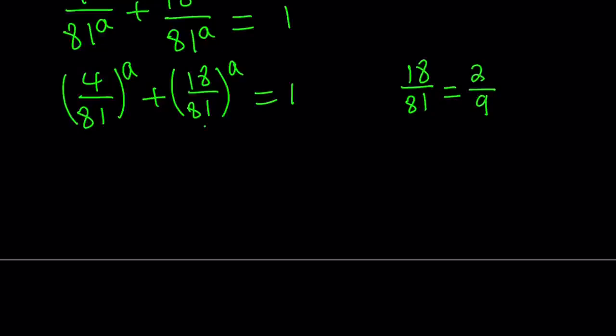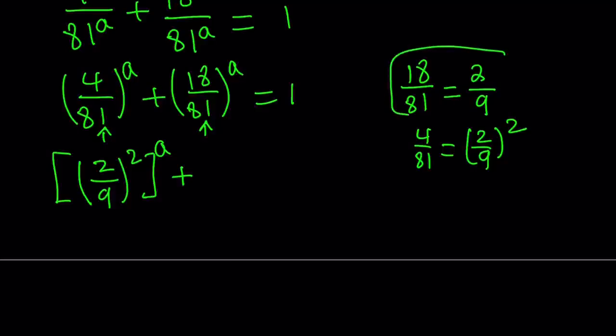So this turns into 2 over 9. And notice that 4 over 81 is 2 over 9 squared, which is kind of cool, right? So we have the following. 4 over 81 can be written as 2 over 9 squared. But then I have to raise it to the power a. And then 18 over 81 can be written as 2 ninths. Let's do that. And then raise it to the power a equals 1.